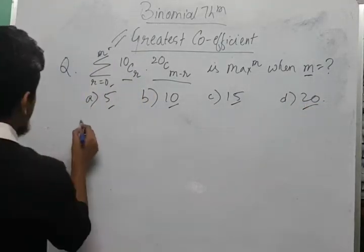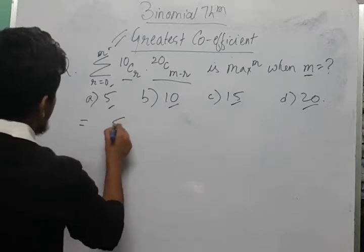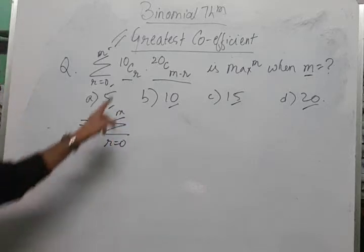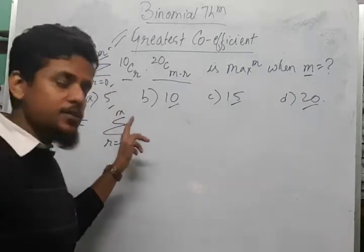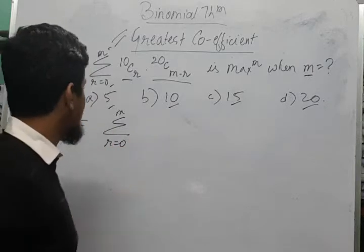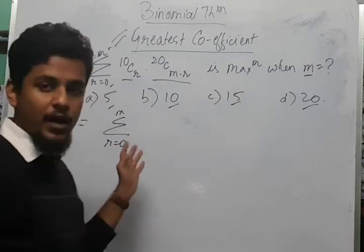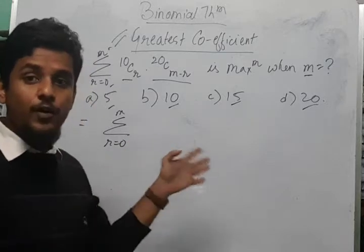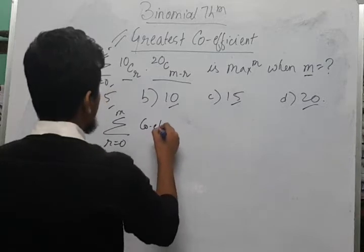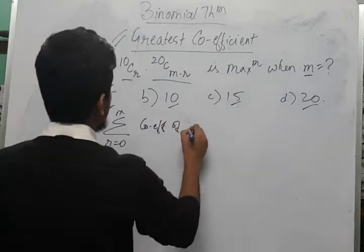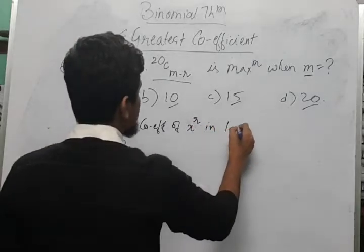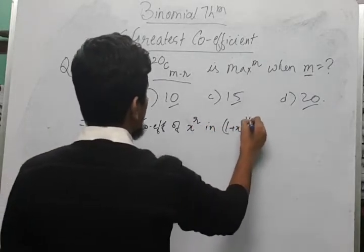So now let's begin. What we have here is the summation where r goes from 0 to m. So 10Cr — what is 10Cr? We can write it down as the coefficient of x to the power r in the expansion of (1+x) to the power 10.